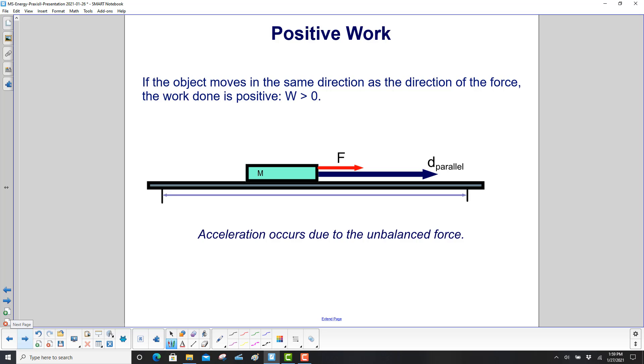If an object moves in the same direction as the direction of the force, the work done is positive. Work is greater than zero. So here we have a little block here. There's a force moving it, or applied in this direction, which is moving it in a parallel distance here. So we have acceleration due to the unbalanced force. That's positive work causing that acceleration.